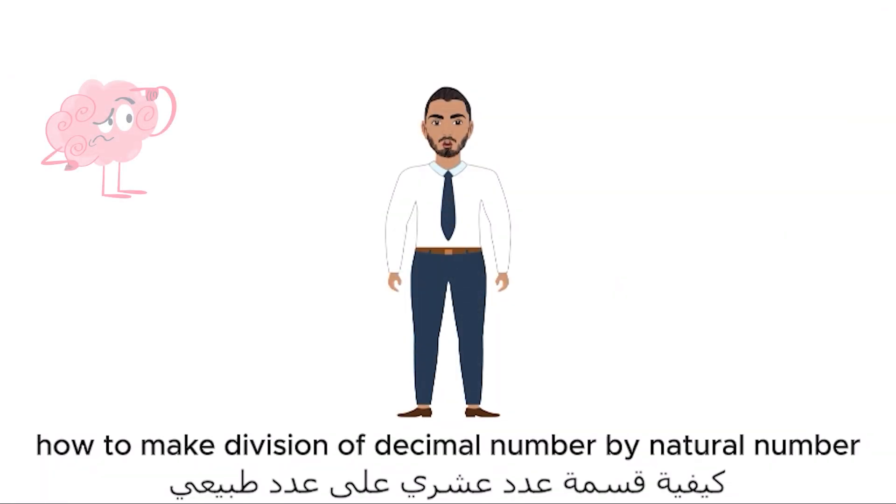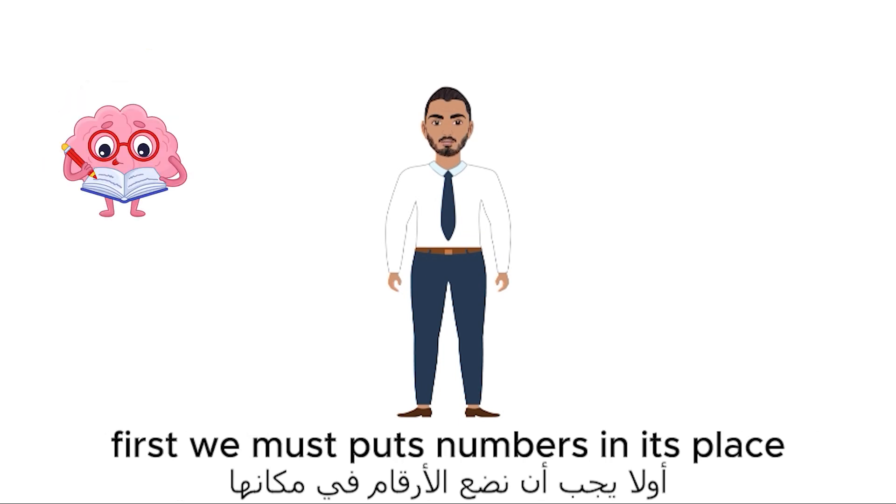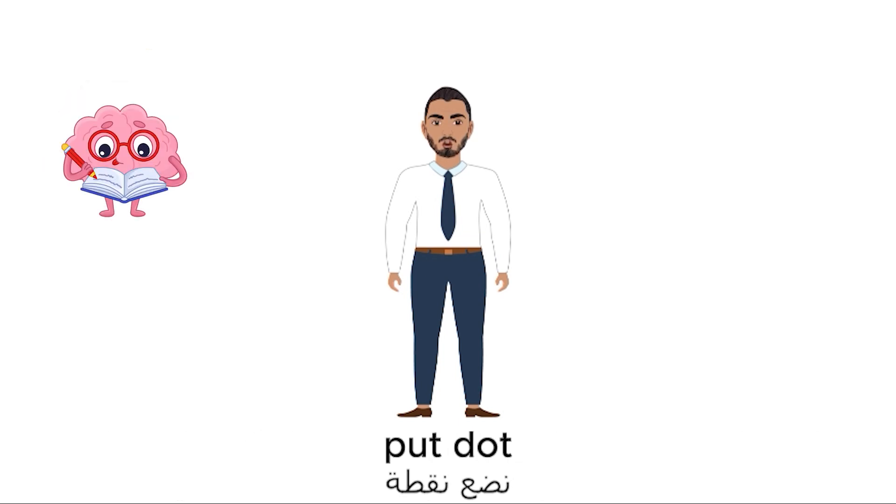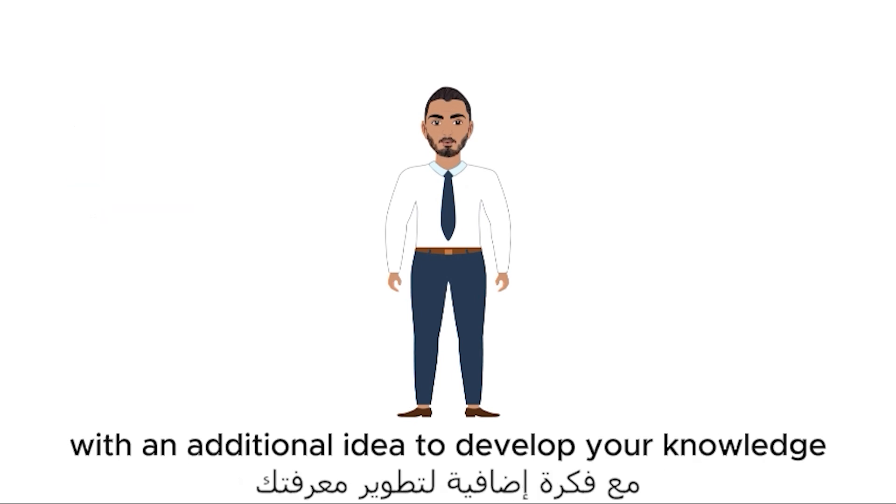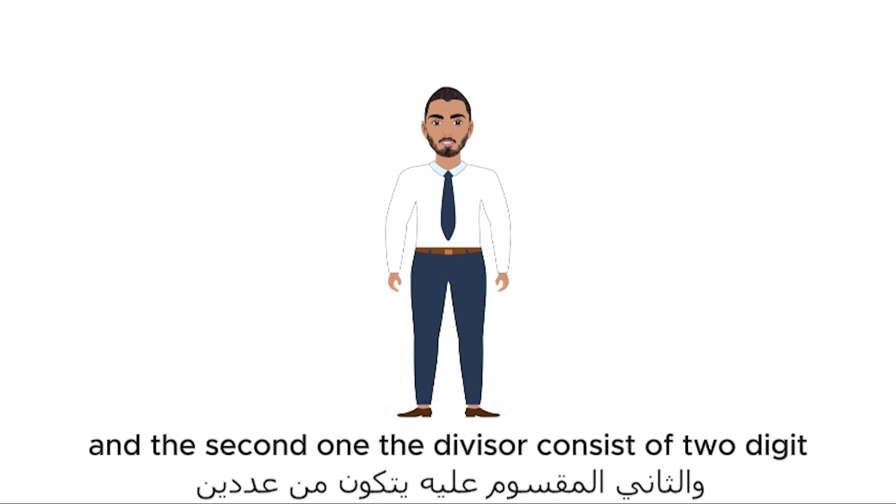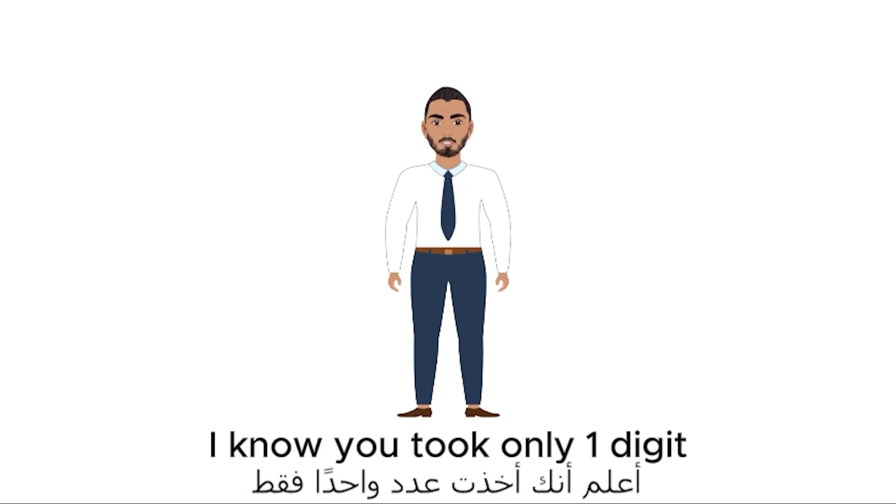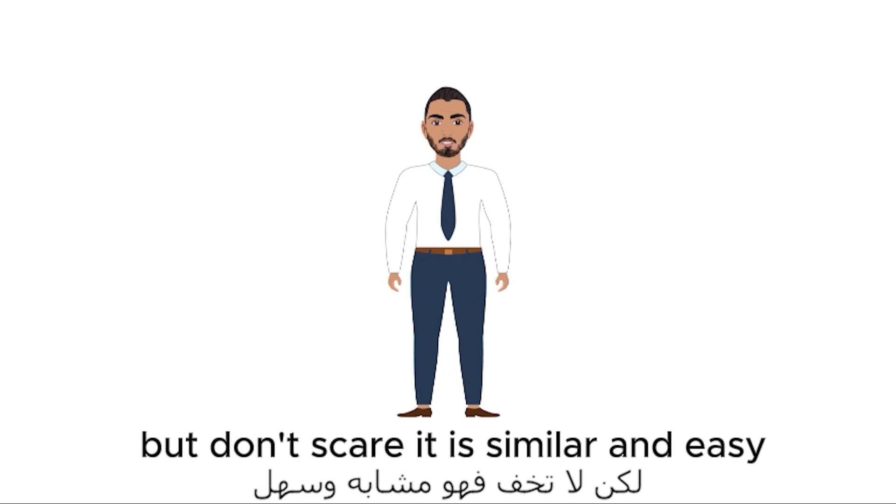How to make division of decimal number by natural number. First we must put numbers in its place, then divide before dot, put dot, and divide after dot. I will give you two examples. First one the divisor consists of one digit, with an additional idea to develop your knowledge, and the second one the divisor consists of two digits. I know you took only one digit, but don't be scared, it is similar and easy.